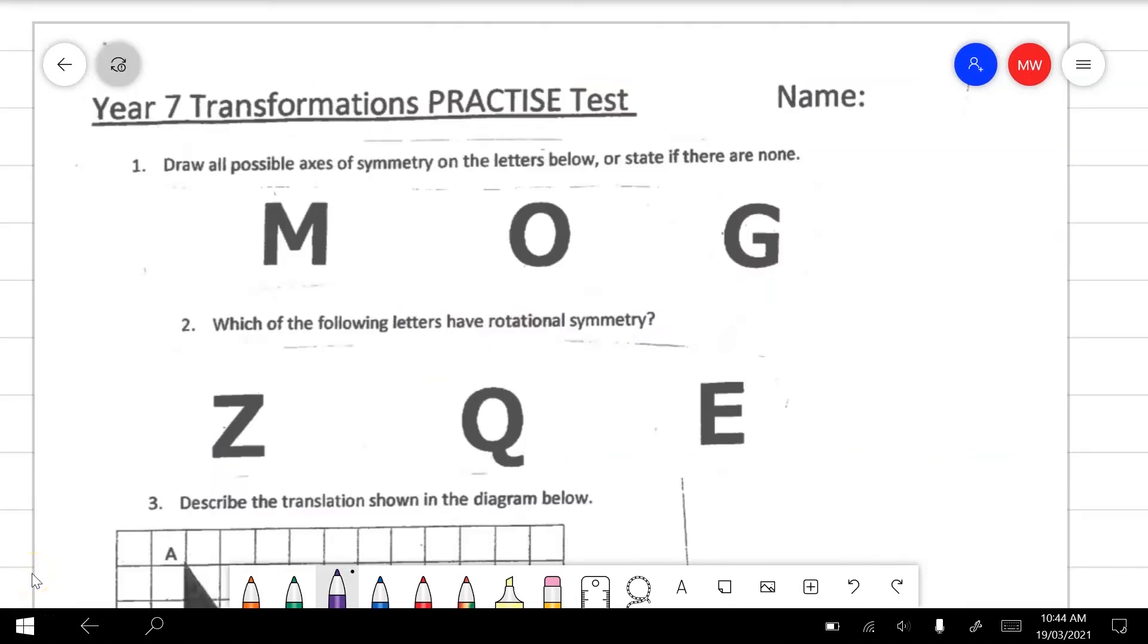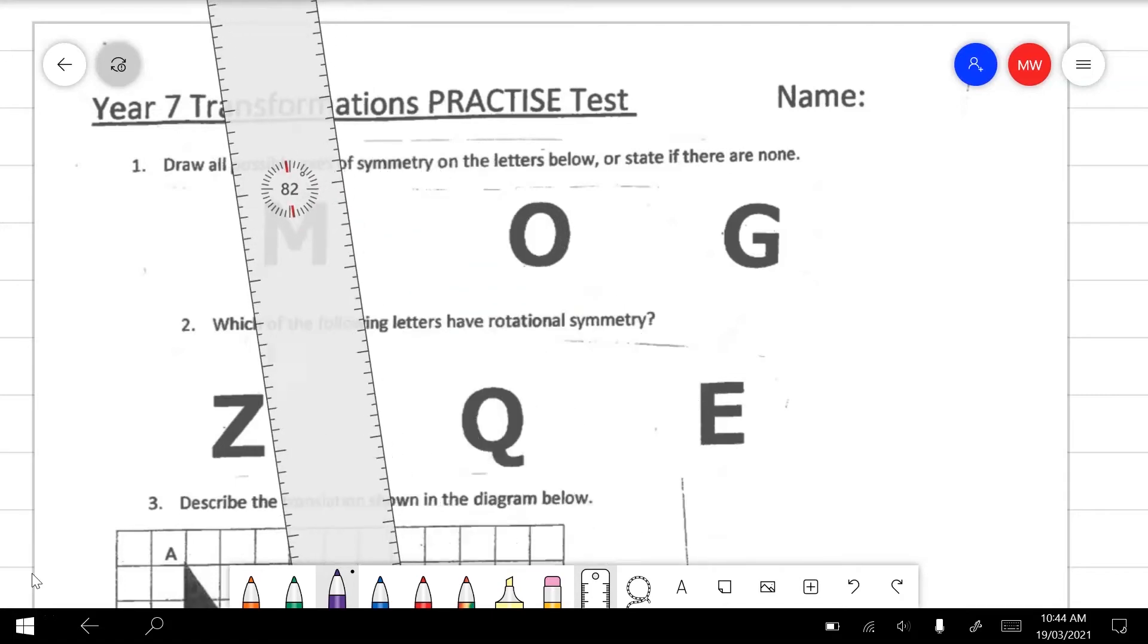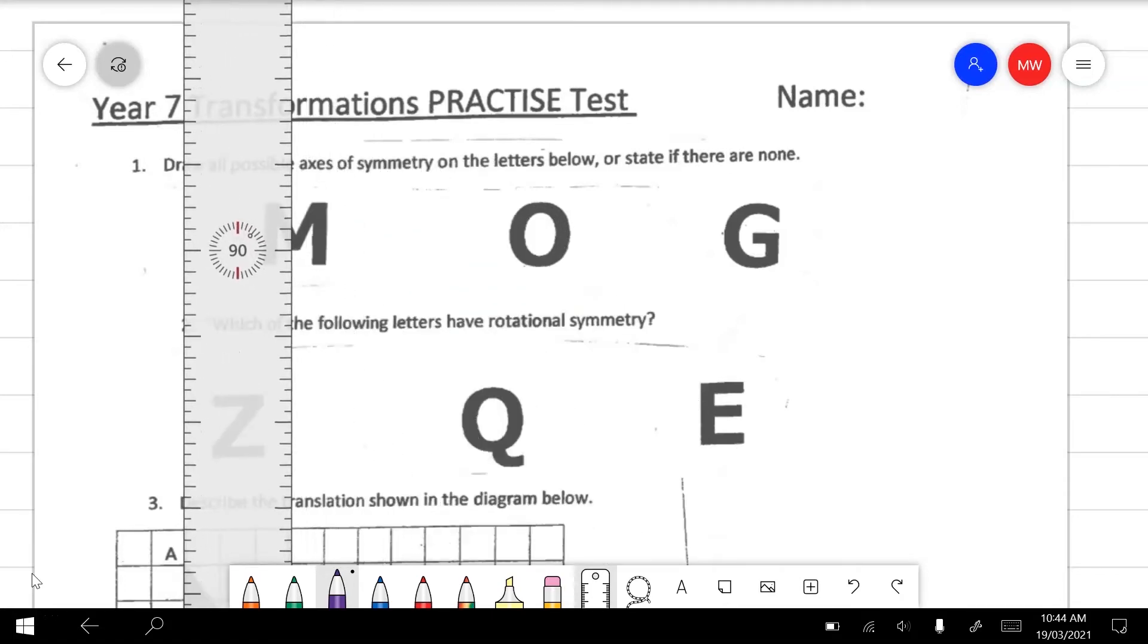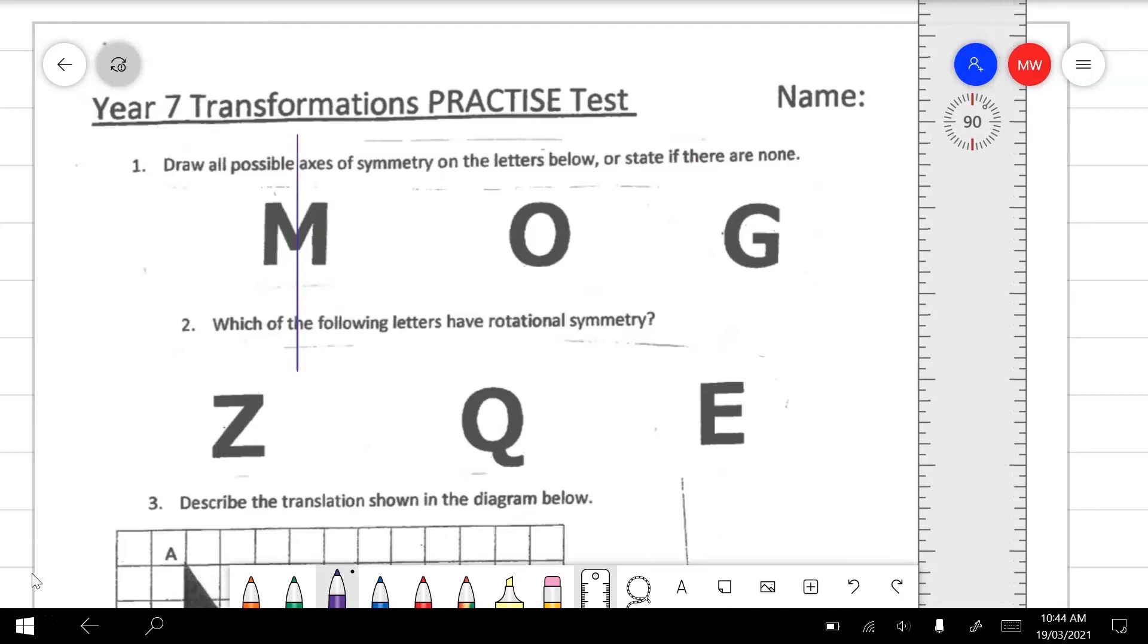Question 1 has us looking at axes of symmetry, and you can sort of think of symmetry as being like a bit of a reflection. So imagine that we drew a mirror in here somewhere. It has to be the same on both sides. So this would be the axes of symmetry for M straight through the middle.